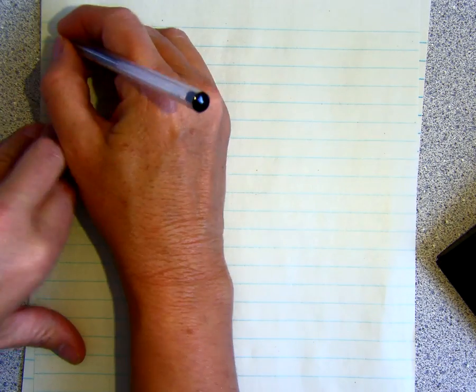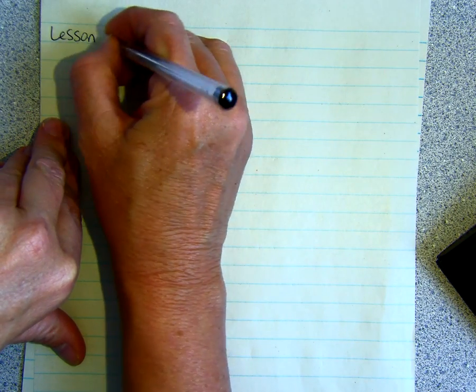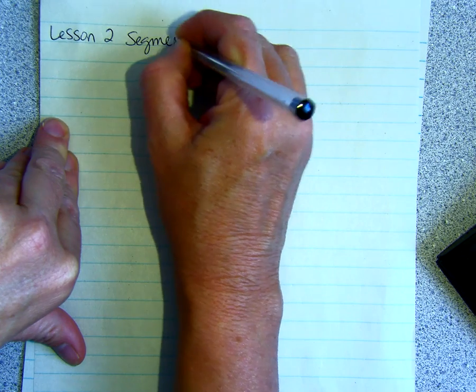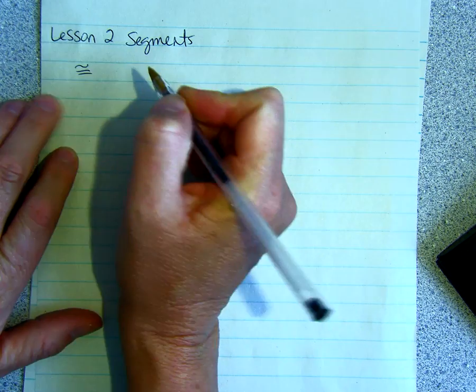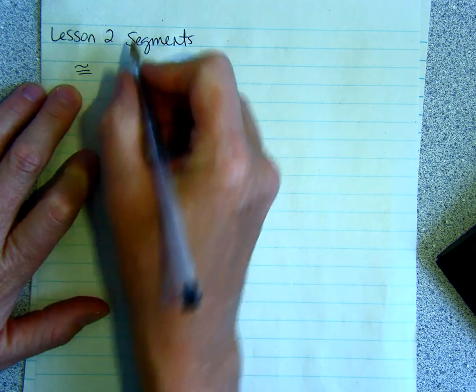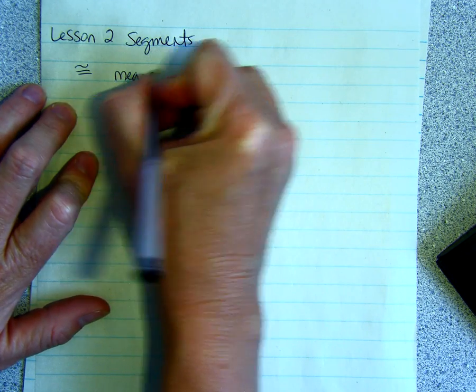Lesson 2, Segments. So one thing we need to remember is the equal sign with a similar symbol on top means is congruent to.